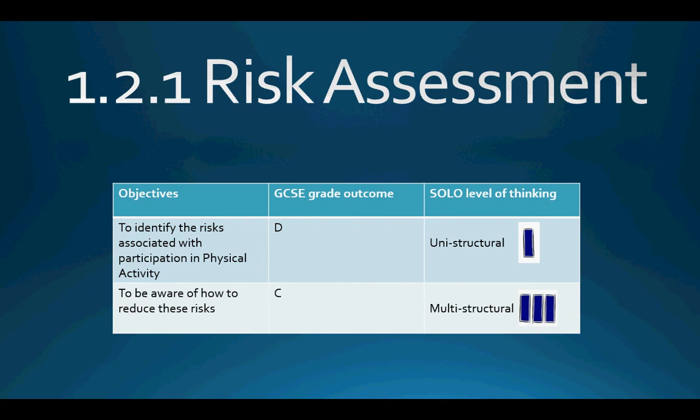This video is looking at section 1.2.1: risk assessments in sport and preventing injuries. The objectives for today's video are to be able to identify the risks associated with participation in physical activity. This will give you enough knowledge to access the GCSE grade D questions on an exam paper, and this requires a unistructural level of thinking.